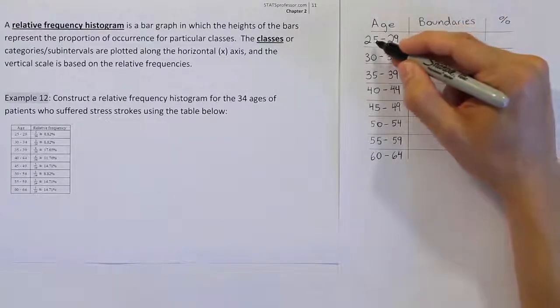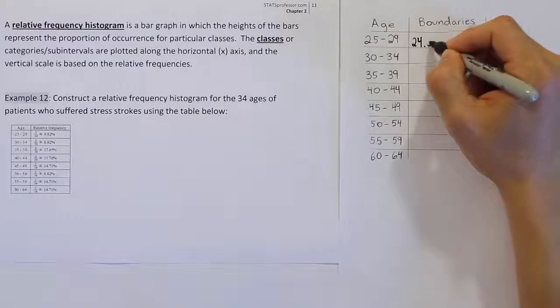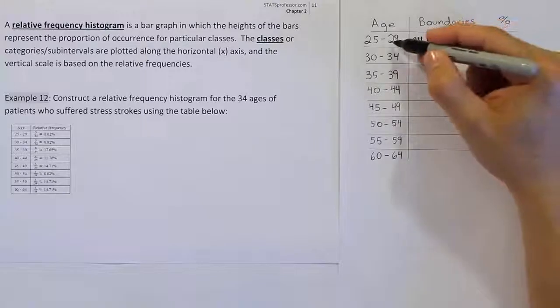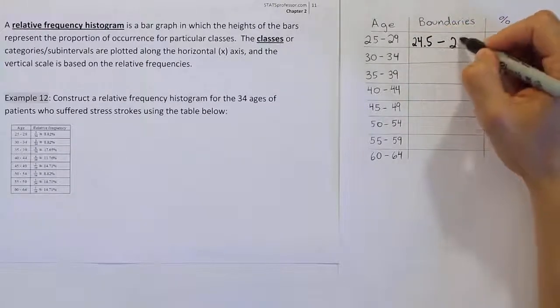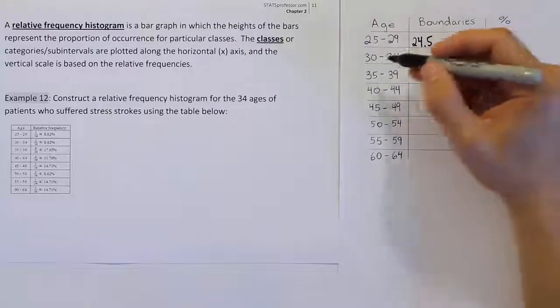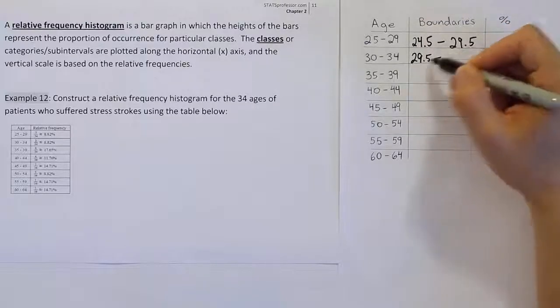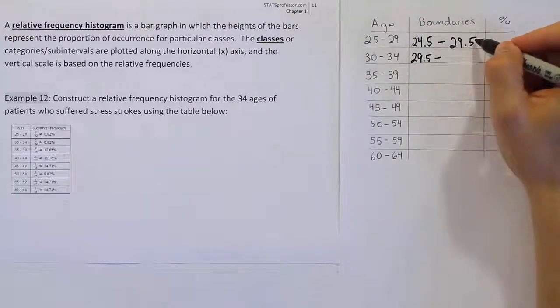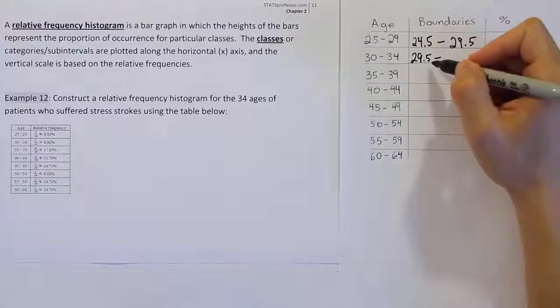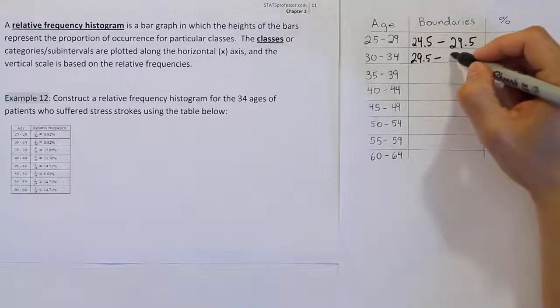We'll have 25 minus 0.5, which gives you 24.5. And if I add it to the upper limit, it'll be 29.5. So there's my first class boundary. If I take away 0.5, I'll get 29.5, and it should match the one on the diagonal. You see what we've accomplished - we now have the end of the first category touching the beginning of the second category, and that's what we wanted. We'll add that same 0.5 to 34, we get 34.5.